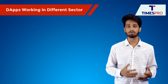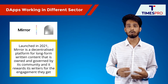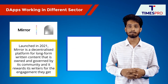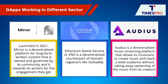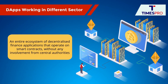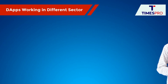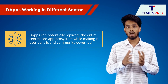Let's now look at some examples of D-apps working in different sectors. Launched in 2021, Mirror is a decentralized platform for long-form written content that is owned and governed by its community, and it rewards its writers for the engagement they get. Ethereum Name Service or ENS is a decentralized counterpart of domain registrars like GoDaddy. Audius is a decentralized music streaming platform that allows its musicians to create music and reach a wide audience without taking away ownership of the music from its creators. There's also an entire ecosystem of decentralized finance applications that operate on smart contracts without any involvement from central authorities. In fact, D-apps can potentially replicate the entire centralized app ecosystem while making it user-centric and community-governed.